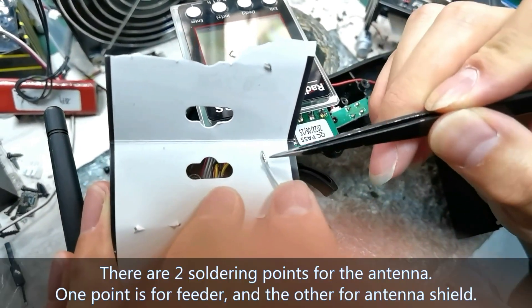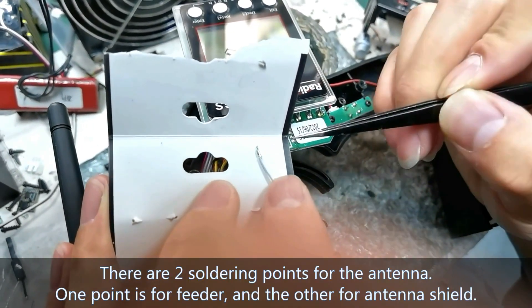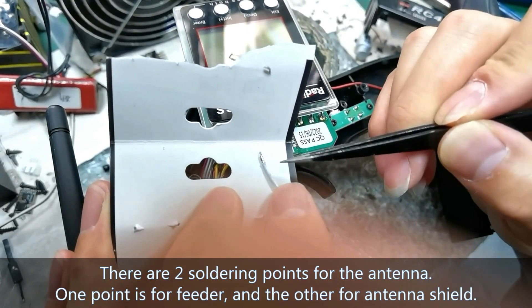There are two soldering ports for the antenna. One point is for the feeder and the other for antenna shield.